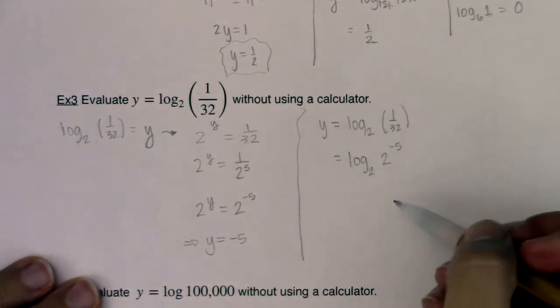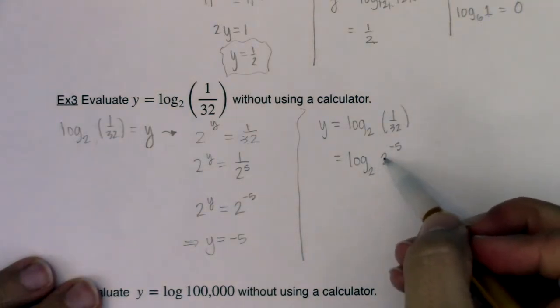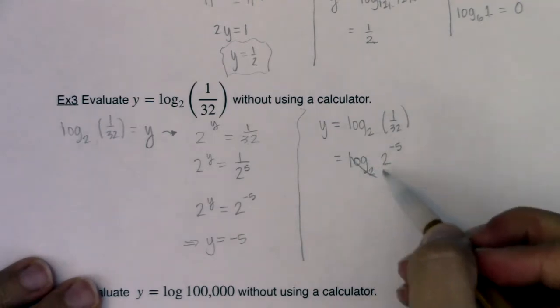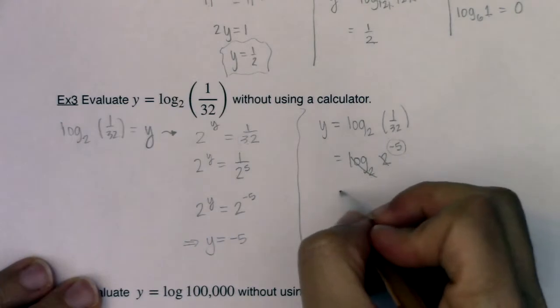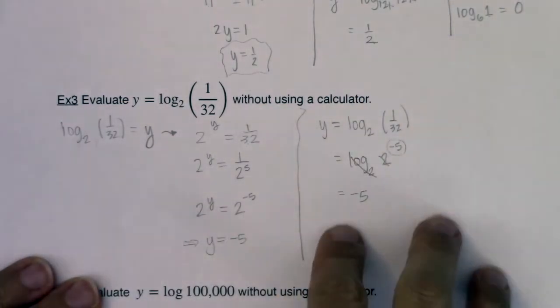And we talked about this situation in example 2. When the base of your logarithm and the base of your power are the same numbers, and they are in this case, they're both 2, the only thing that survives is the exponent. All right, so that's just a simpler way.